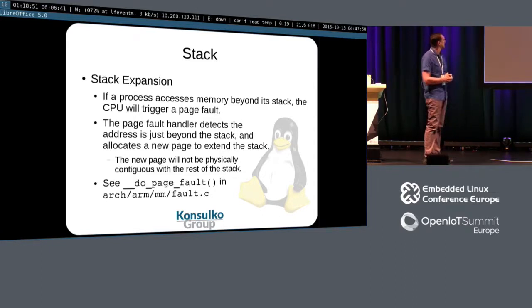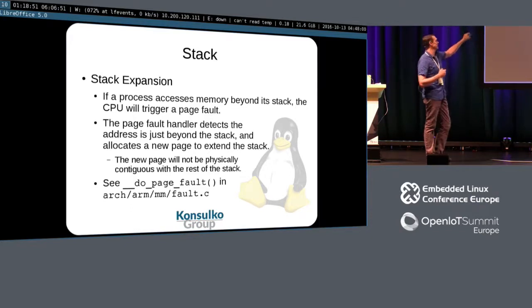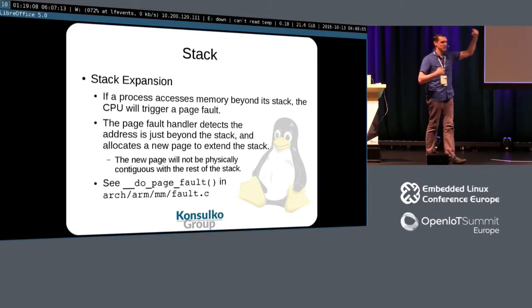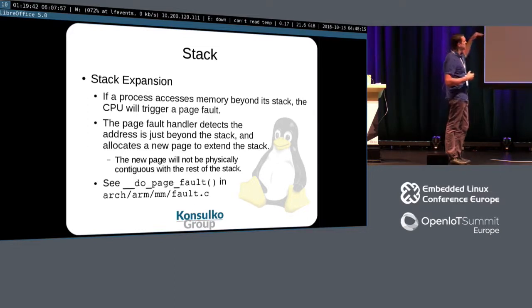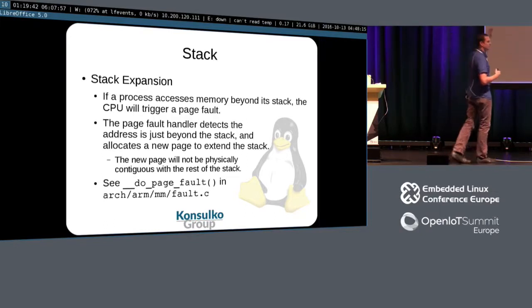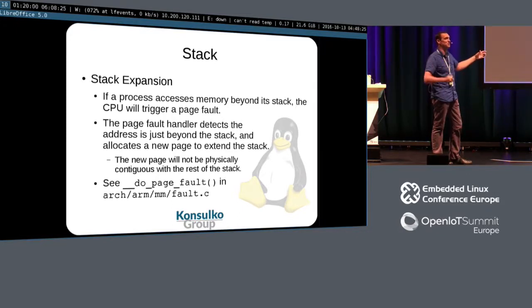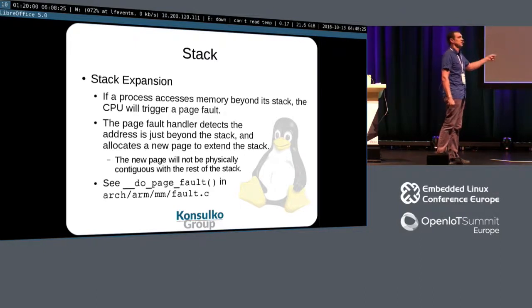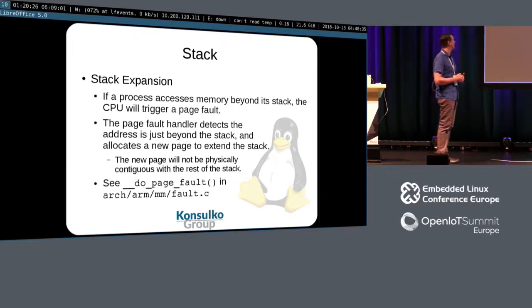Finally, the stack: if a process goes beyond a stack, the CPU is also going to trigger a page fault. One of the special things the page fault handler does in this case is it's going to detect that you've got an address just beyond the stack — it knows where that's at. It can allocate a new page: allocate another PFN, go into the page tables, map that in, drop it in the TLB. That PFN could be anywhere — it's not physically contiguous, just virtually contiguous. It gets faulted in, execution continues on, and it's able to drop stuff on that segment of the stack. You can see how that works in do_page_fault — that's the ARM version.